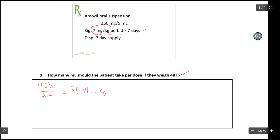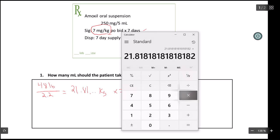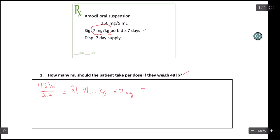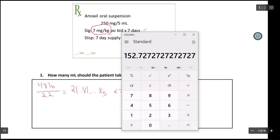So I'm going to take kilograms, and I'm going to multiply this by 7 milligrams. Because this is the dose. So this is the amount of kilograms. If I multiply that by 7, I get this, 152.7272. This is 152.7272, and that kind of repeats on and on.